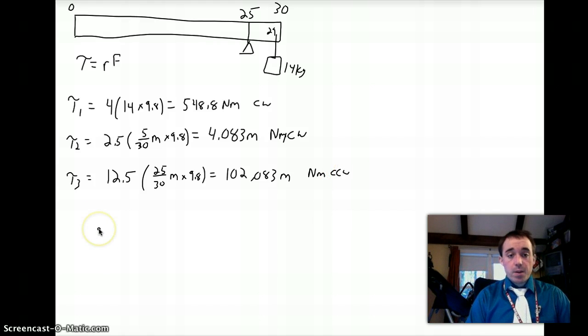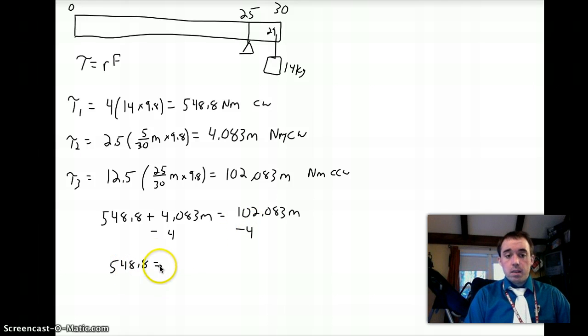That's my counterclockwise torque. Add up all the clockwise's together, so that's 548.8 plus 4.083 M equals 102.083 M. Subtract the 4.083 M from both sides, you're going to get 548.8 equals 102.083 minus 4.083, I'm going to give you a nice number of just 98 M.